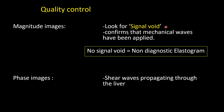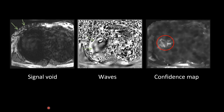Normally the signal void should be present, and if it is not present, the elastogram is non-diagnostic. We can see the shear waves propagating through the liver in the phase images. In the magnitude images we look for the signal void, and in the phase images we look for wave propagation. In this example, the distortion of the signal where the passive driver is applied is called the signal void, and you can see propagation of the waves through the liver parenchyma in the phase image.